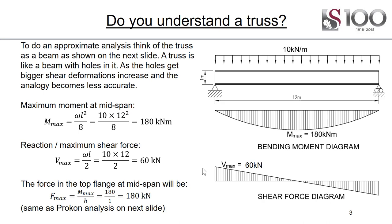Let's treat this as a simply supported beam. Our maximum moment at midspan is ωL²/8, which is 180 kilonewton meters. The reaction at each side, left and right, is just the total load divided by 2, so that's 60 kilonewtons on the left and right side.